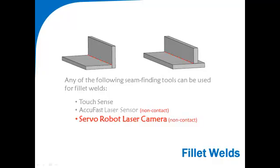And laser cameras. These are used to project the laser line and detect the two walls. They can reduce cycle time and provide data about joint gaps.